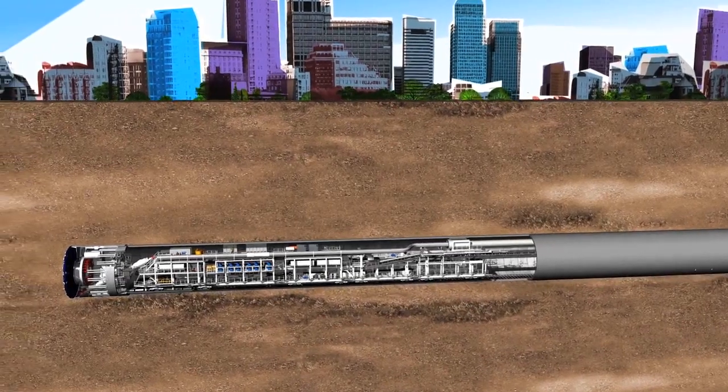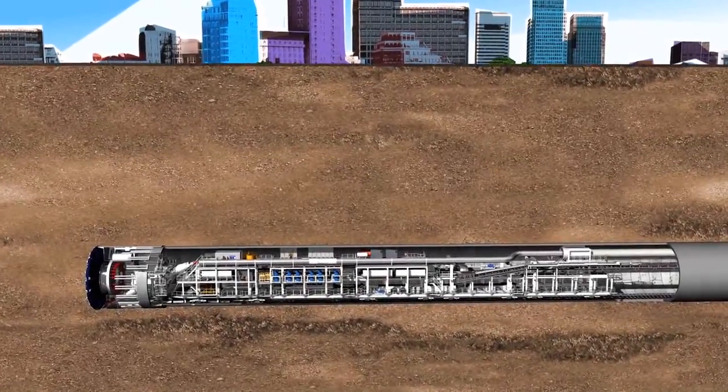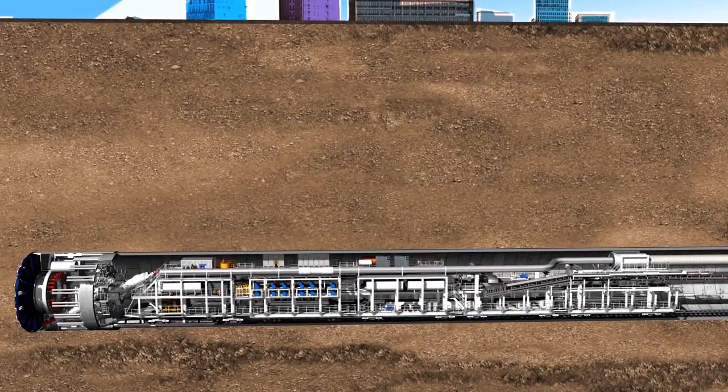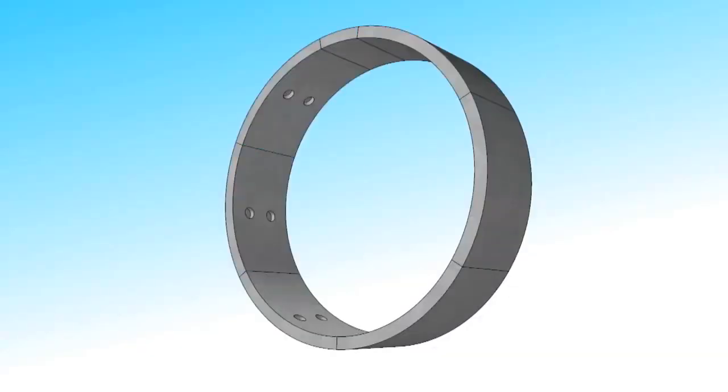Once the tunnelling phase is done, the cutting wheel and screw conveyor are stopped and the ring-building phase starts. A complete tunnel ring consists of several lining segments made of pre-built reinforced concrete.